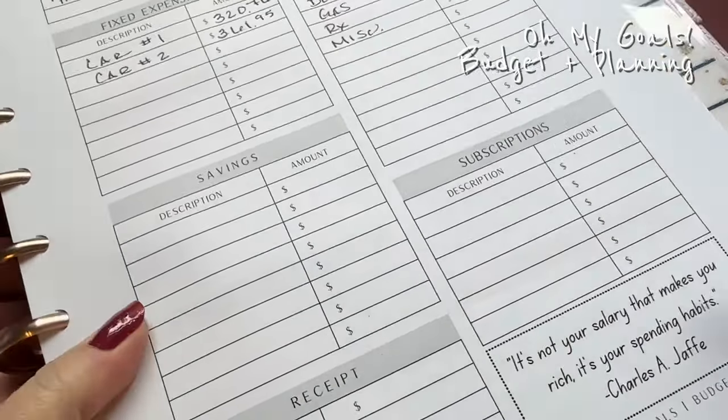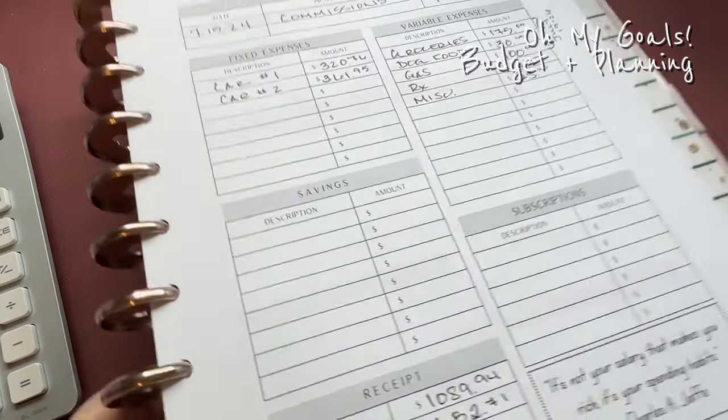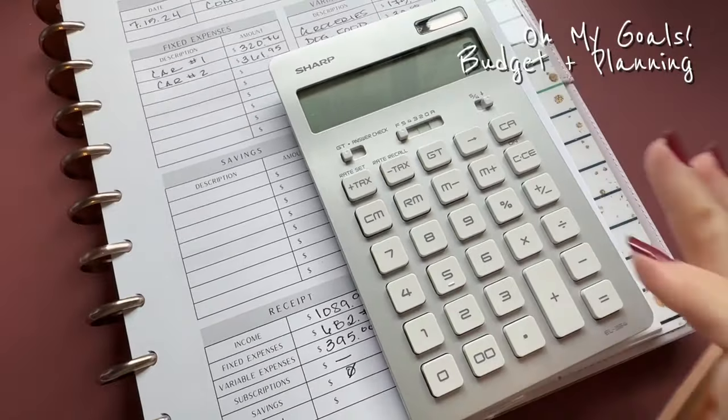All right, so our fixed expenses were $682.71. Income, I'm going to write that down again. So this is the receipt area. And again, this page isn't very static because it's in black and white, but it also gives you an example of how you can print this out in grayscale if you wanted to. So if you're downloading my budget kits, you can definitely do that. I'm adding up my variables right now and they're $395.